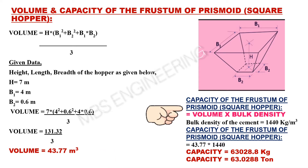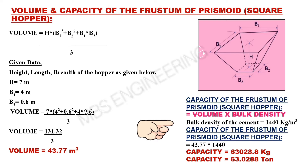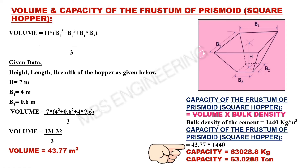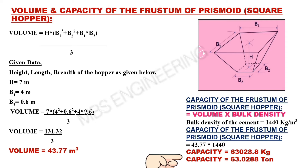Next, we learn about how to calculate the capacity of the frustum of prismoid square hopper. Volume is multiplied by bulk density. Assuming the bulk density of cement is 1,440 kilograms per cubic meter, 43.77 multiplied by 1,440. The frustum of prismoid square hopper has a capacity of 63,028.8 kilograms, or 63.0288 tons.